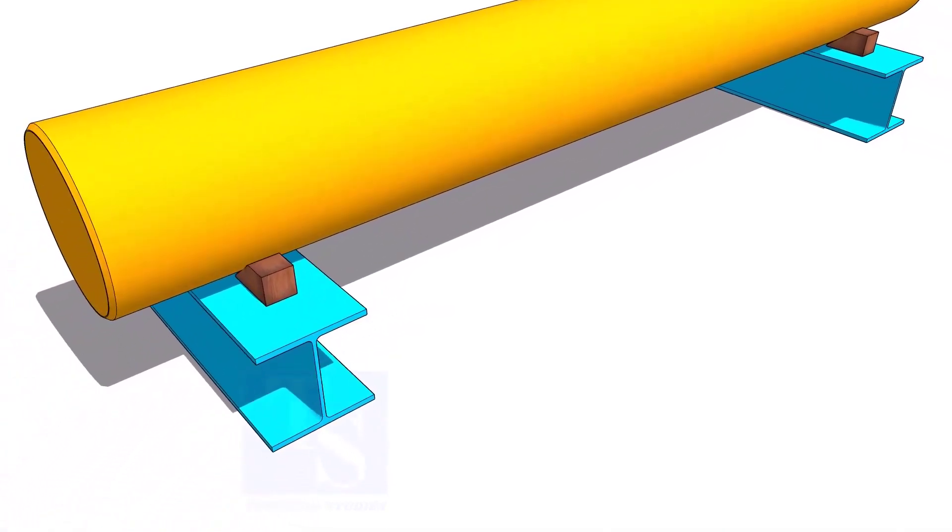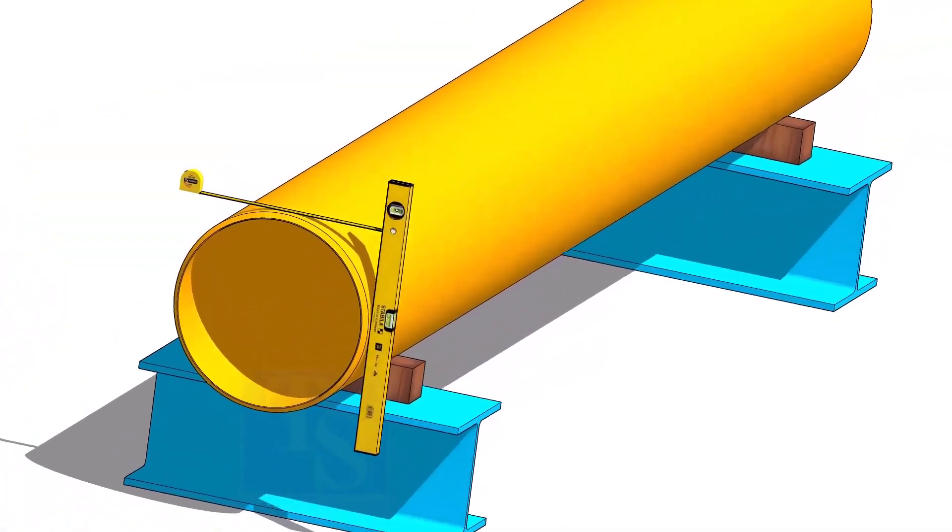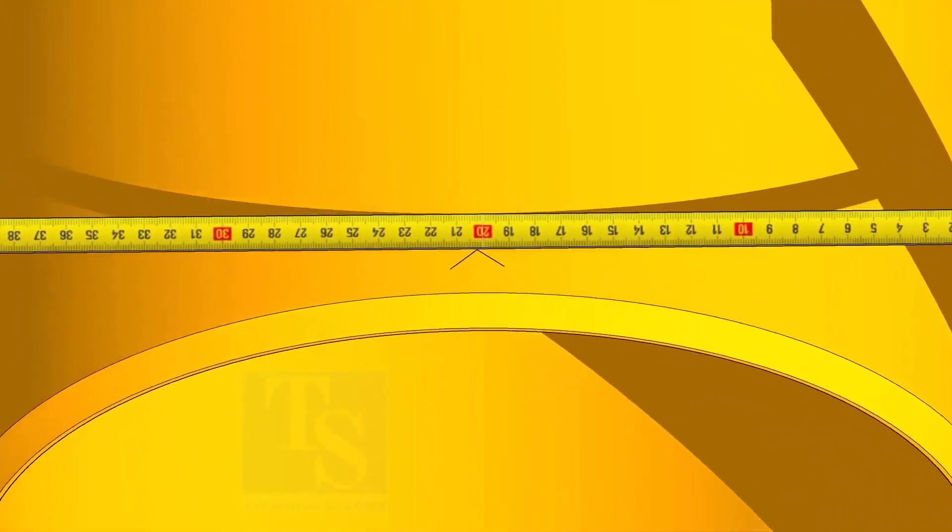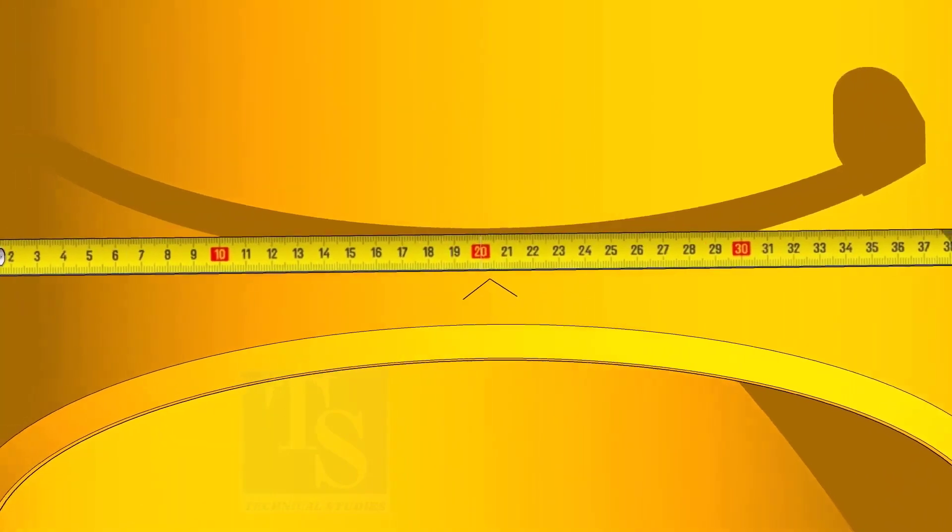After leveling the pipe, hold a level bottle vertically at the side of the pipe as shown. Mark the half OD on the top of the pipe and cross-check from the opposite side.